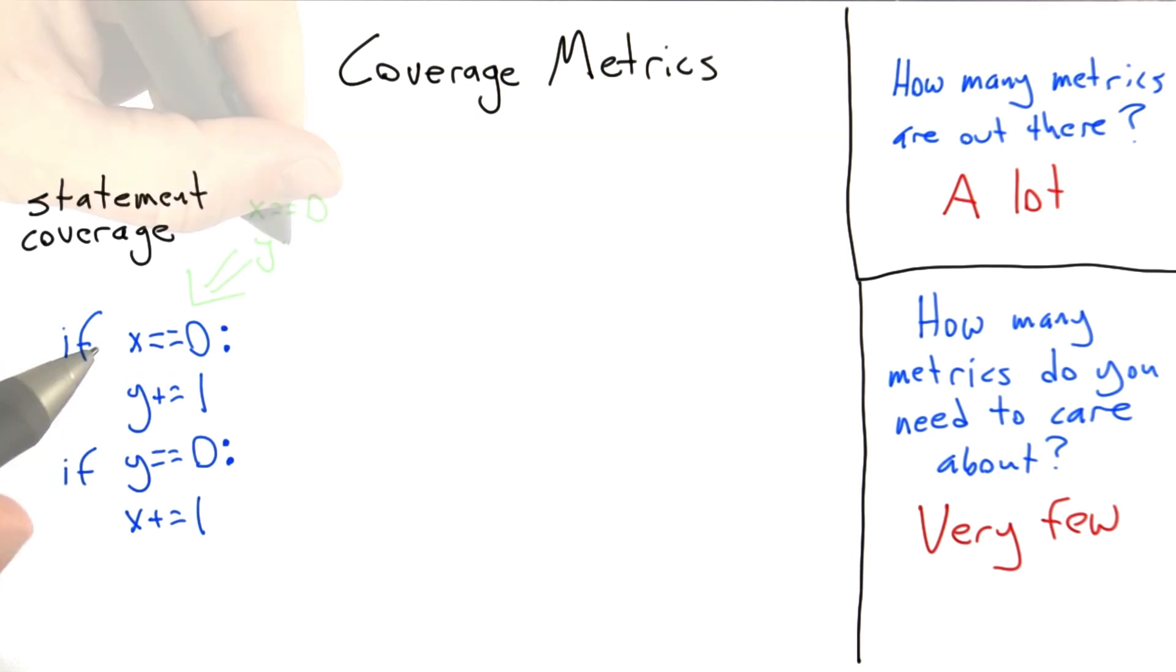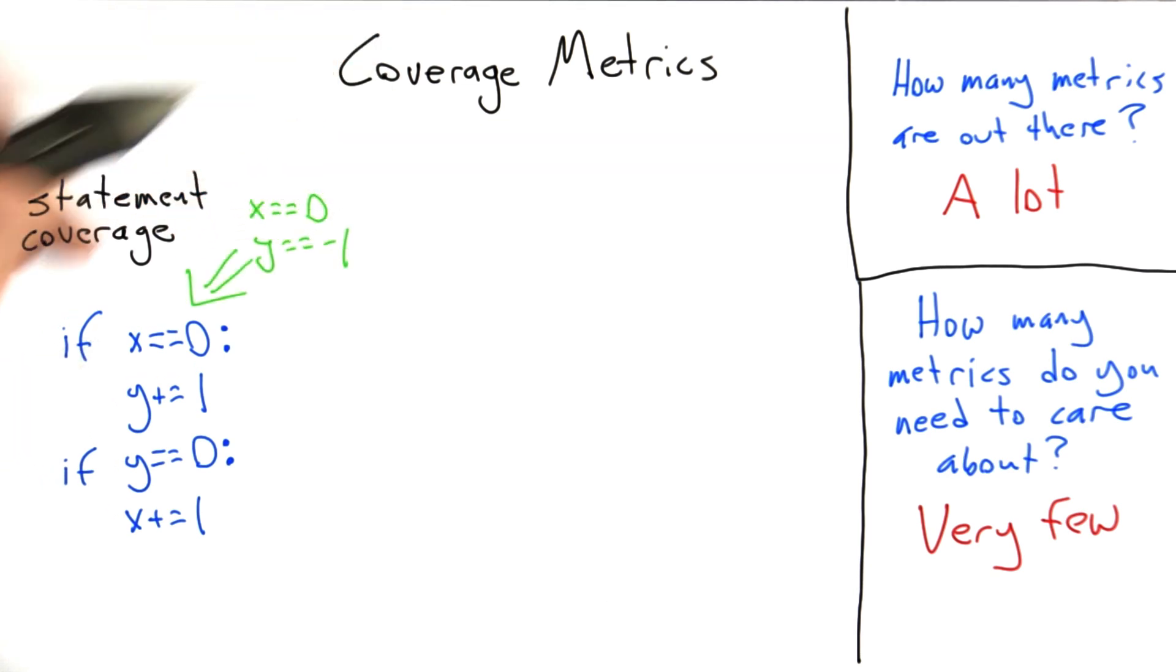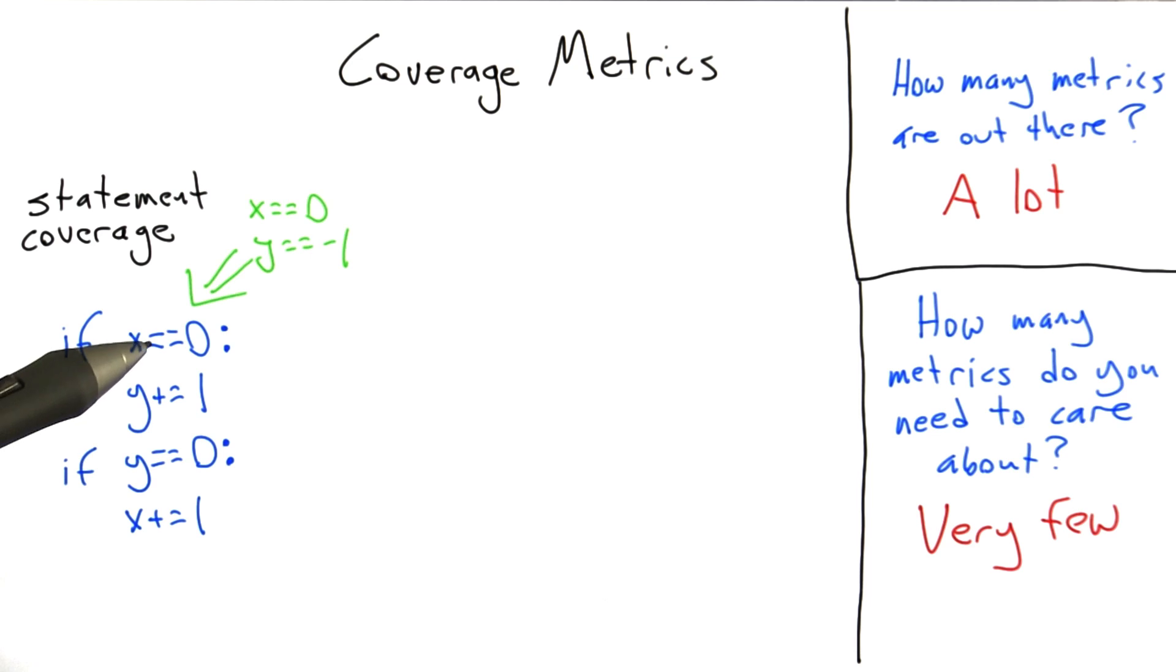So let's say we call this code with x equals 0 and y equals minus 1. Well, in that case, this x is 0 test is going to pass, and so y is going to be incremented by 1, making y equal to 0. Now, if y equals 0 also passes, and so we're going to increment x.